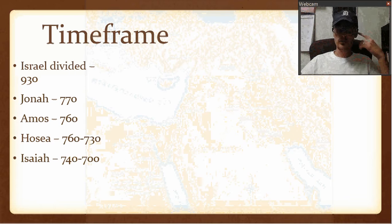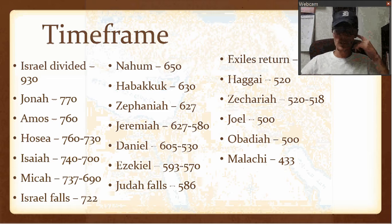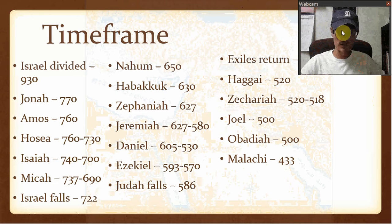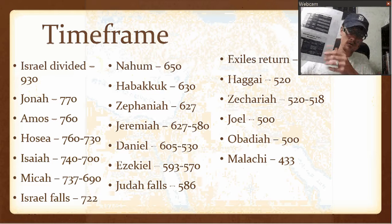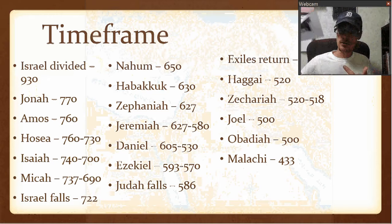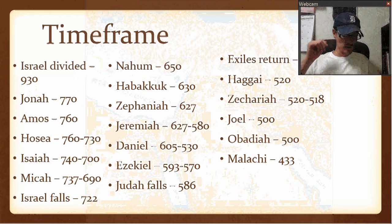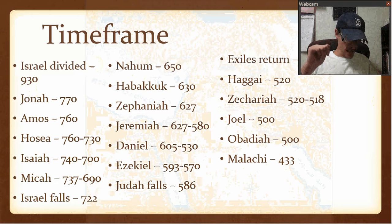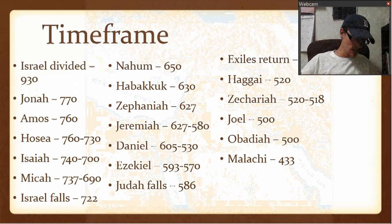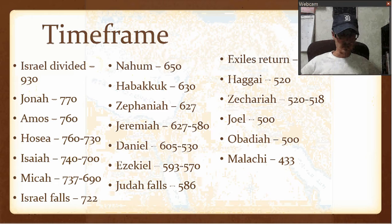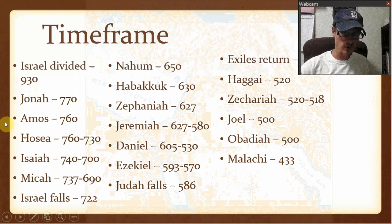And then as far as the time frame, this is just to kind of show you — and remember, this was supposed to be given in conjunction with the paper that I give out, which has the prophet, the date that they prophesied, what the setting was or when it happened, the main message, and who they went to and all that stuff on there. So this is just to kind of show you a flow of when they came.